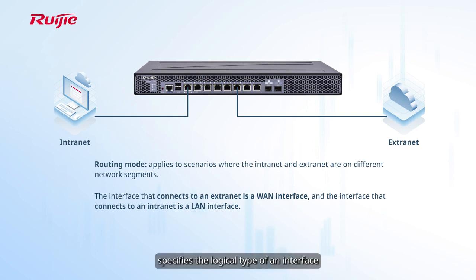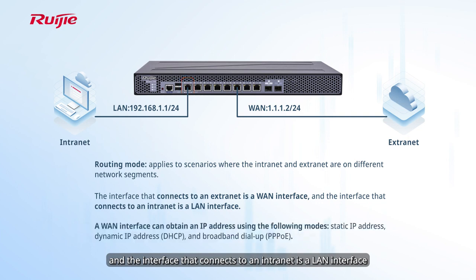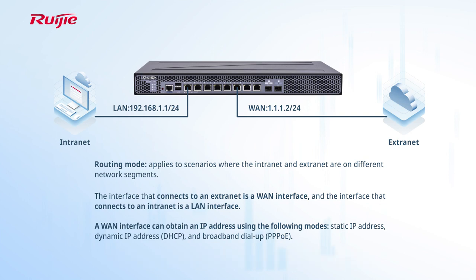Interface type specifies the logical type of an interface. The interface that connects to an extranet is a WAN interface, and the interface that connects to an intranet is a LAN interface. Access mode specifies the mode for a WAN interface to obtain an IP address. Static IP address, DHCP, and PPPoE dial-up can be set.